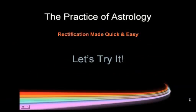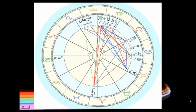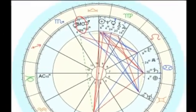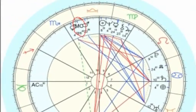So let's try it. This is my own chart, simply for efficiency, because I am not going to spend hours researching every detail of Lindsay Lohan's life to indicate how to rectify a chart — I already know everything that's happened to me. As you see, I use equal houses. Here is my midheaven at 28 Libra, according to the time on my birth certificate.